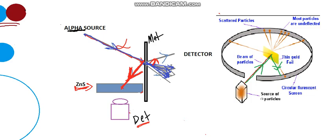We will start from here. We were talking about the alpha scattering experiment done by Geiger and Marsden. They were doing some good work and published the results. But Rutherford was having a different idea — he was thinking about the real mechanism of what is happening inside the atom or inside the metal plate, and why this kind of scattering is happening.